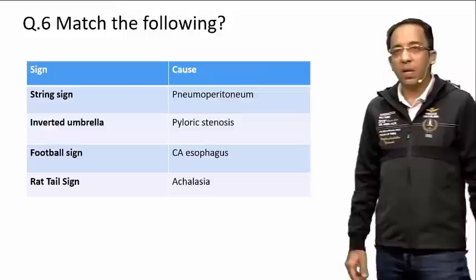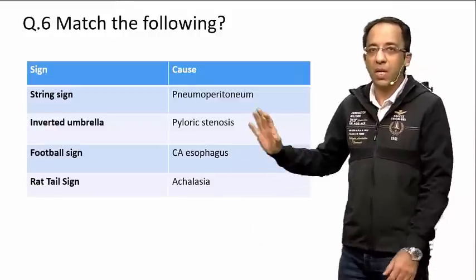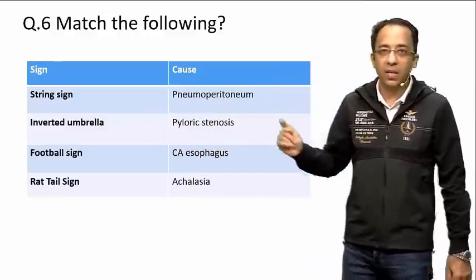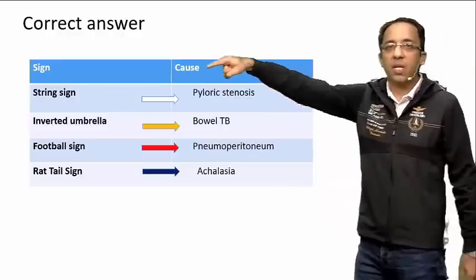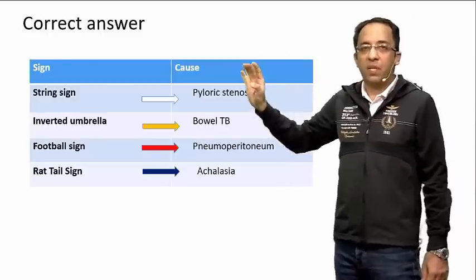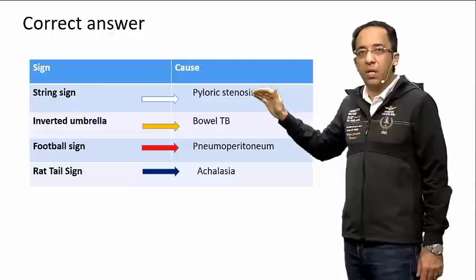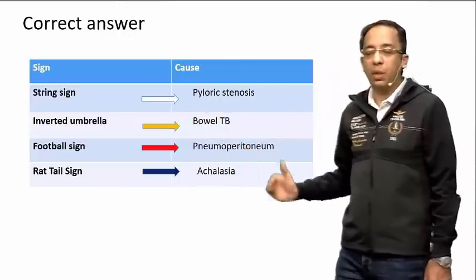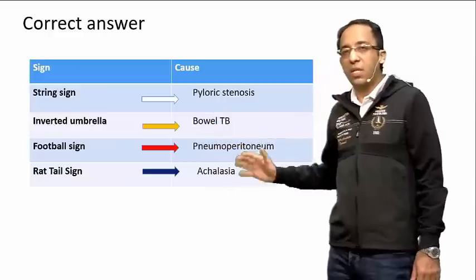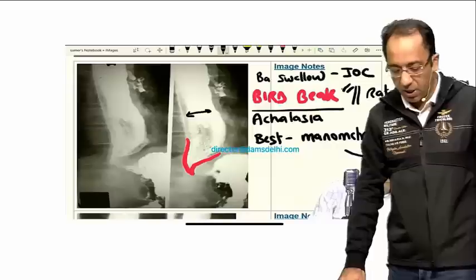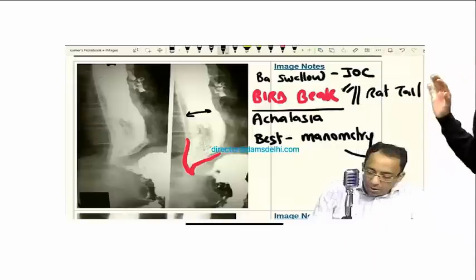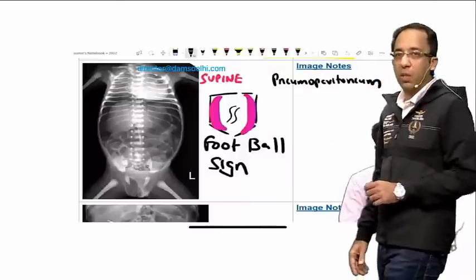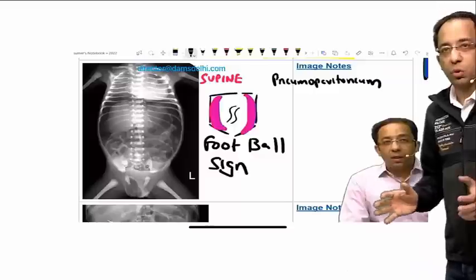Next was a match-the-following question on radiological signs: string sign, inverted umbrella sign, football sign, and rat tail sign. Correctly matched: string sign is seen in pyloric stenosis on barium — though the investigation of choice for pyloric stenosis is ultrasound. Inverted umbrella sign is a sign of ileocecal tuberculosis. Football sign is seen in pneumoperitoneum. Rat tail sign is seen in achalasia cardia — which can show both bird beak and rat tail appearance.